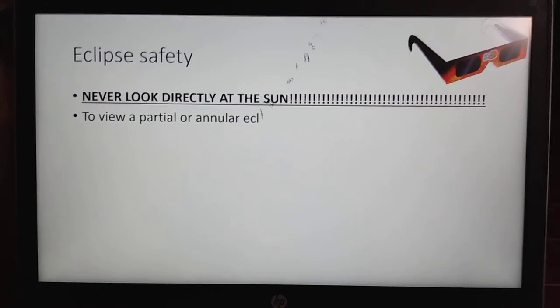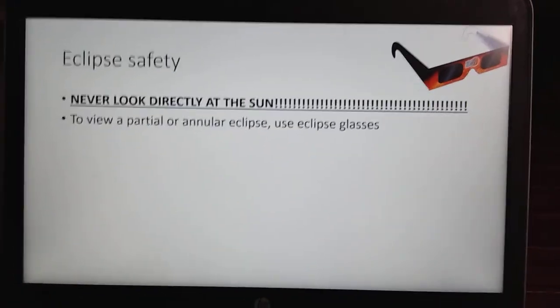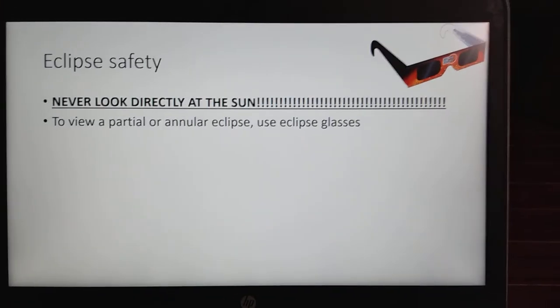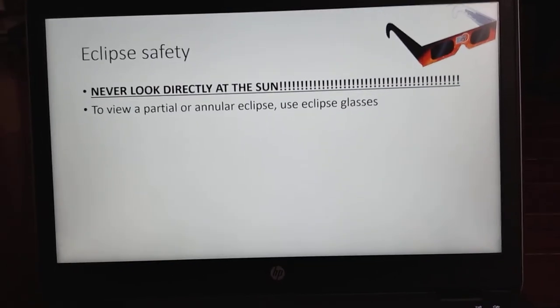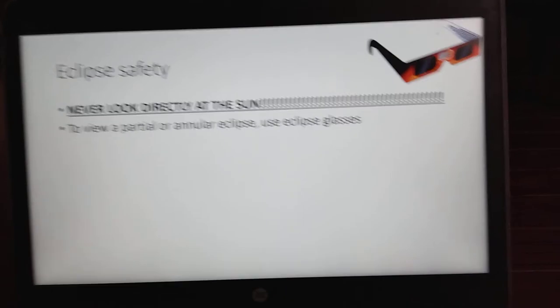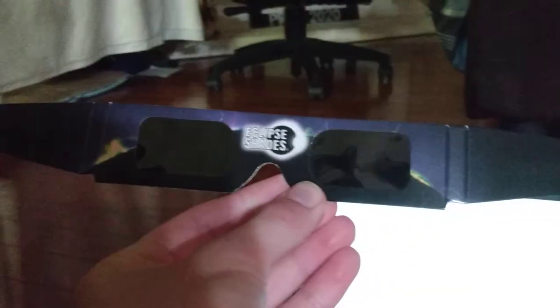The best way to view a partial or annular eclipse is to use eclipse glasses like the ones in the upper right-hand corner of your screen. These are mine.